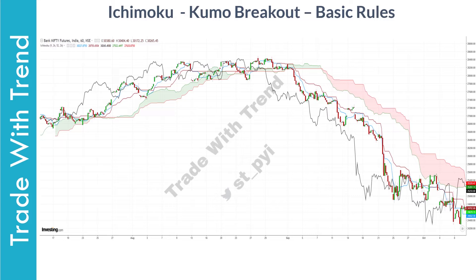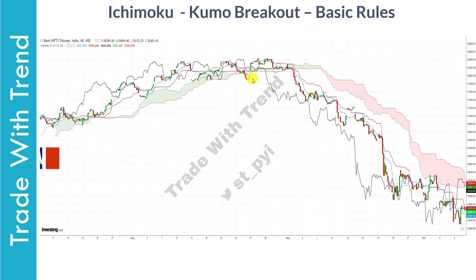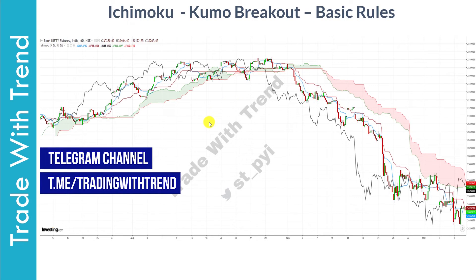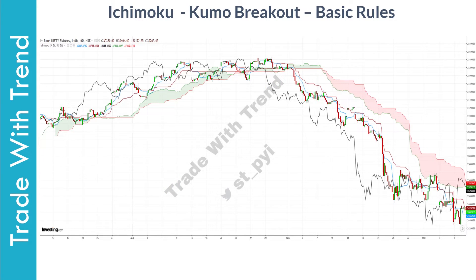When it comes to short sell trades, price should be below the Ichimoku Cloud and both Senku A and Senku B should be heading lower. At one point, price is clearly below the Ichimoku Cloud, but a Kumo Twist happens in that region — therefore, there is no short sell trade available there. As you gain more experience, you can begin short selling earlier, but if you're beginning to trade with Ichimoku Clouds, you should prefer short selling at the point where the Kumo Twist has happened and Senku A and Senku B are clearly heading lower.